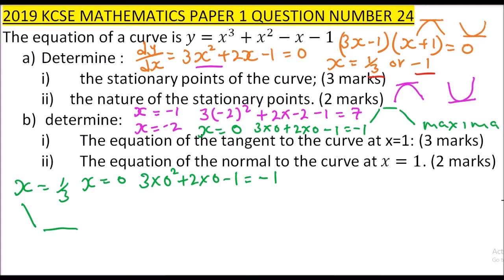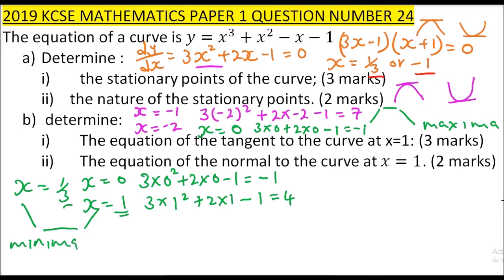We take a point to the right, x = 1, and substitute: 3(1)² + 2(1) - 1 = 3 + 2 - 1 = 4. The gradient is positive. Since the gradient goes from negative to positive, this is a minimum point. That is how you determine the nature of the turning points.